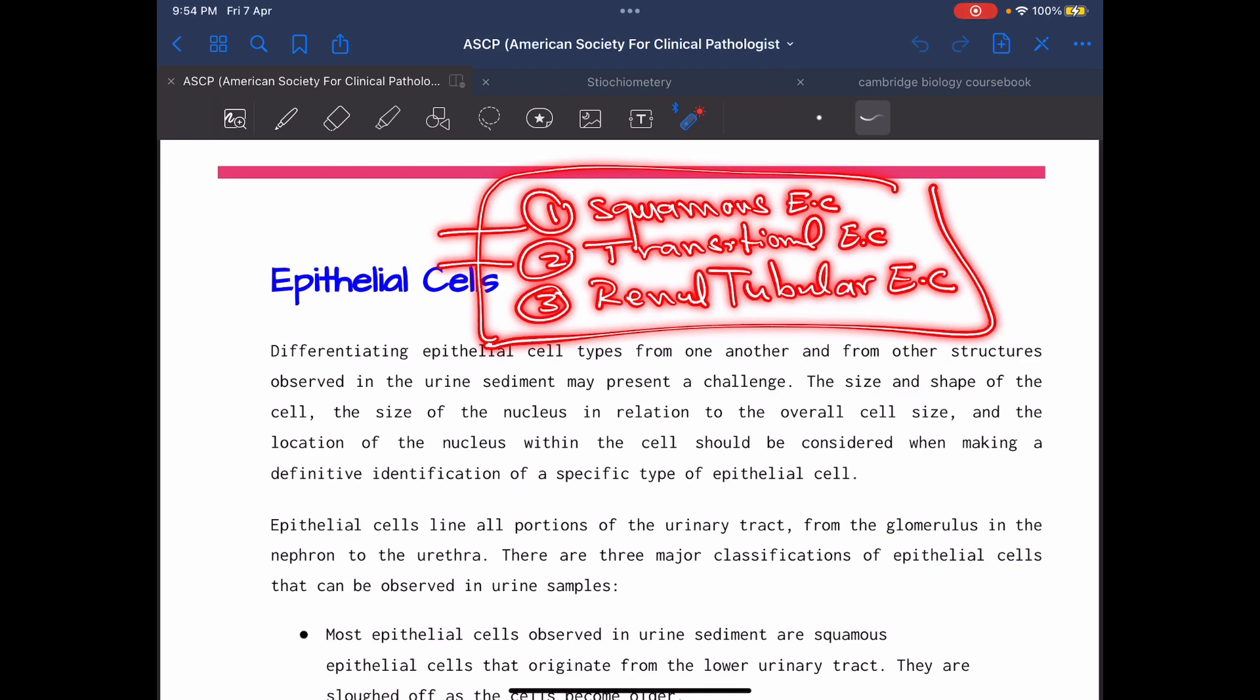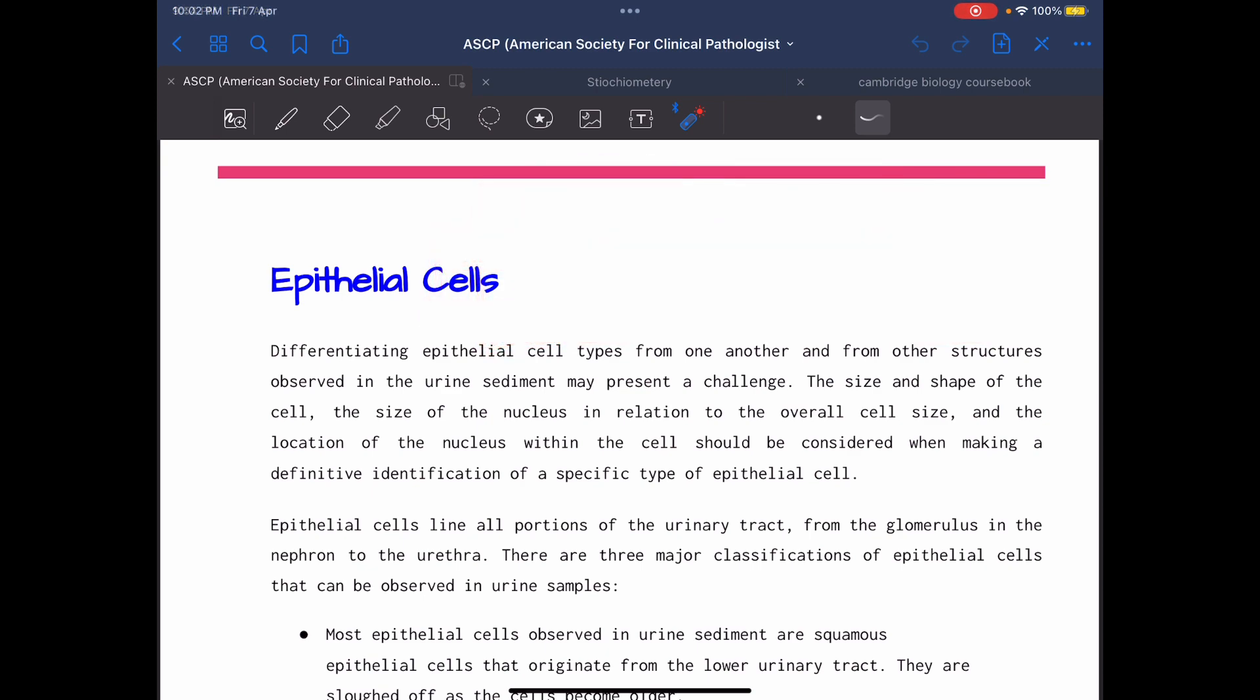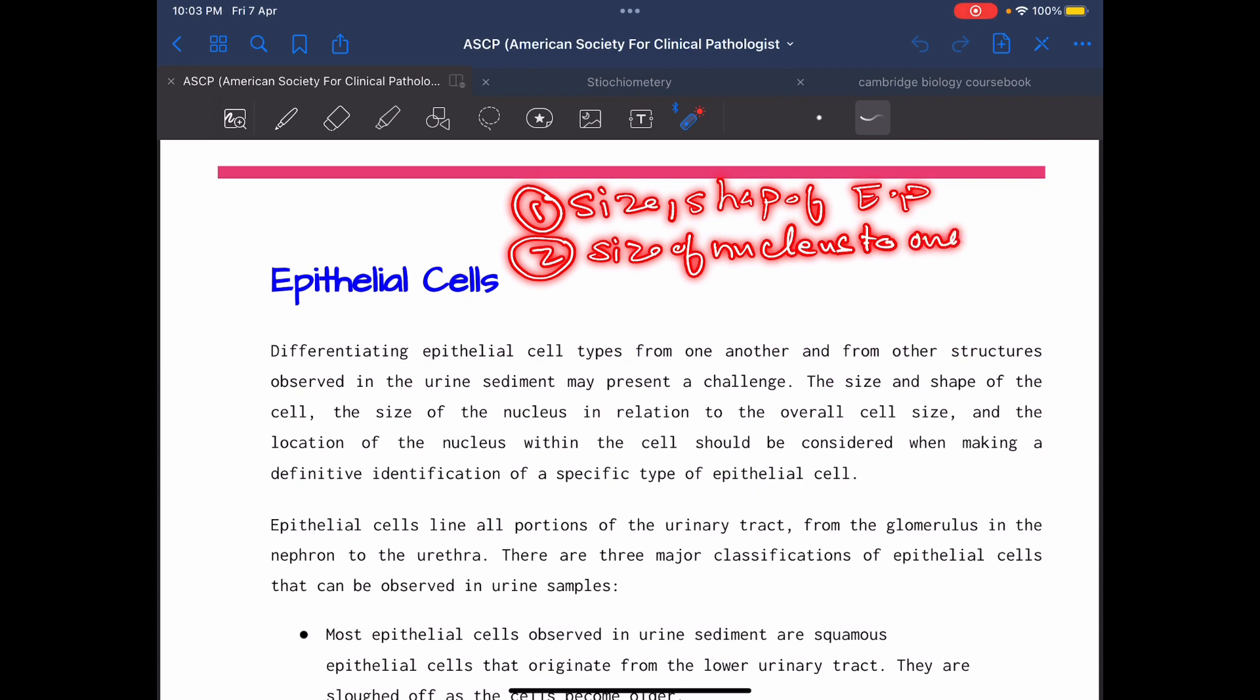How to differentiate between the three epithelial cells? First, to differentiate between the three major types of epithelial cells, you need to consider first the size and shape of the epithelial cells. Second, size of nucleus. Third, overall cell size. And the location of the nucleus.